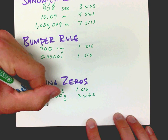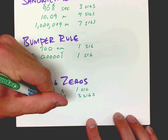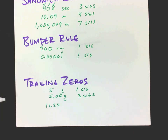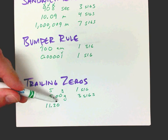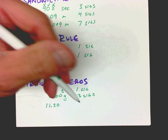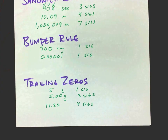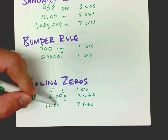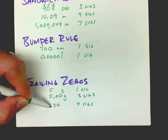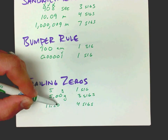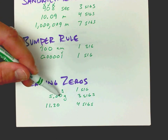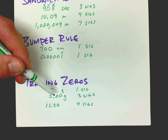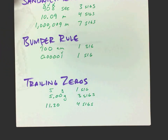Let me show another trailing zeros example: 11.30. This isn't just 11.3 — this is 11.30, meaning we measured all the way out to hundredths place and know it's exact. So this example would be 4 significant figures. A quick way to remember: if the zeros are after the decimal point and at the end of the number, they're trailing zeros and they're significant. Those are basically the rules to determine how many significant figures are in a measurement.